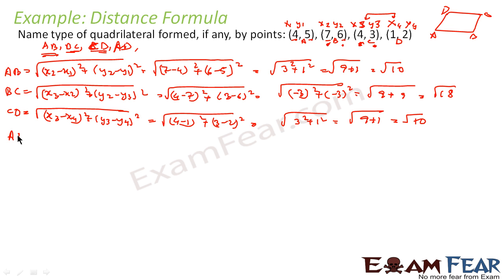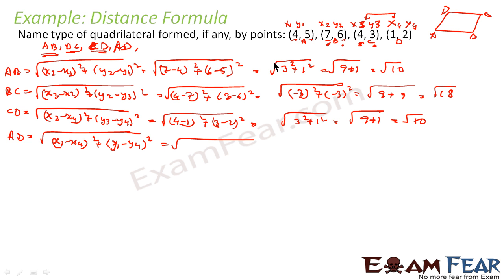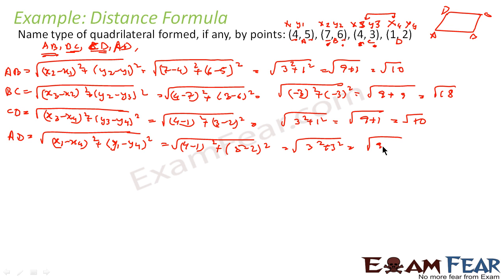Now let us find AD. AD is root of (x1 minus x4) squared plus (y1 minus y4) squared. x1 is 4 and x4 is 1, so 4 minus 1 squared; y1 is 5 and y4 is 2, so 5 minus 2 squared. This becomes root of 3 squared plus 3 squared — root of 9 plus 9 — that is root of 18.